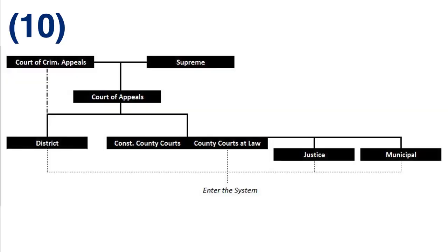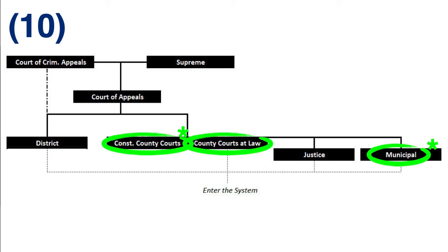Further, CCP 18.01(c) states, with only a few exceptions outlined under CCP 18.01(d)(i) and (j) — we'll talk about those later — only certain magistrates may sign search warrants for mere evidence. The magistrates signing this type of search warrant may only be a judge of a municipal court of record or of a county court who is an attorney licensed by the state of Texas, a county court at law judge, a district court judge, a judge of the Texas Court of Criminal Appeals, or a justice of the Supreme Court of Texas.